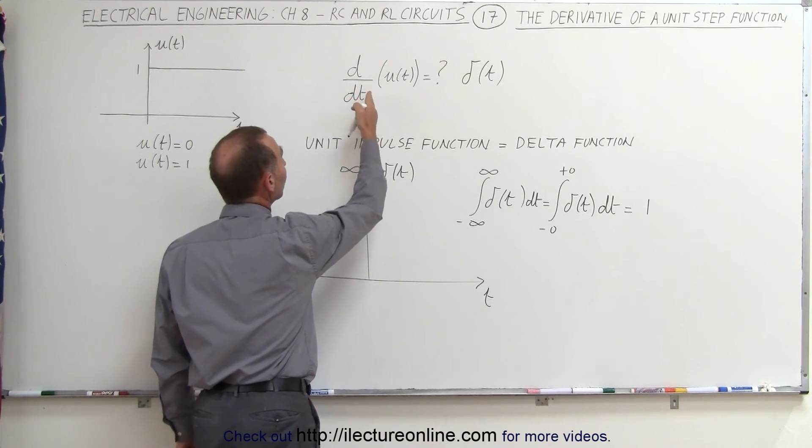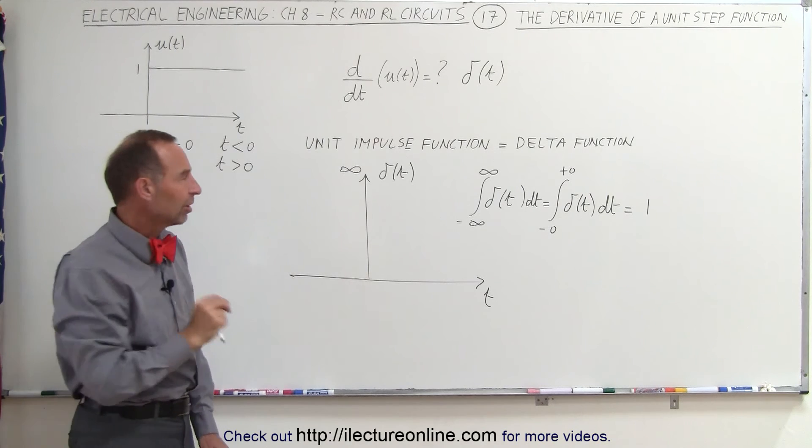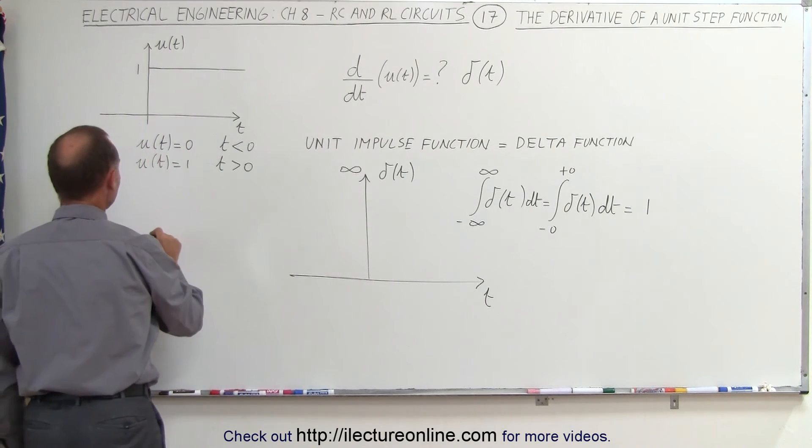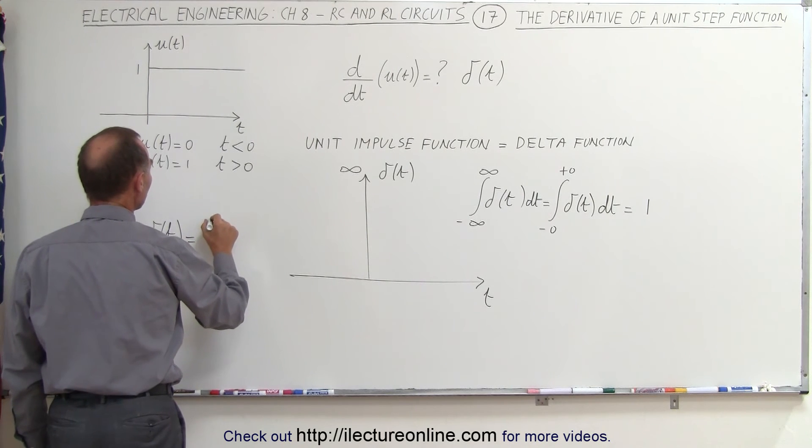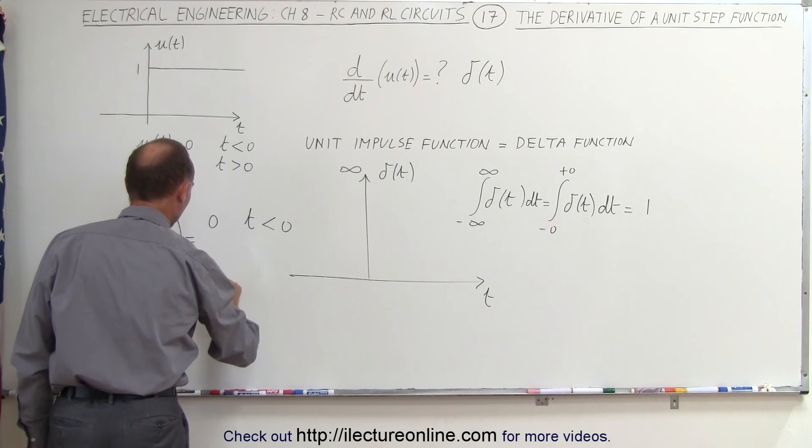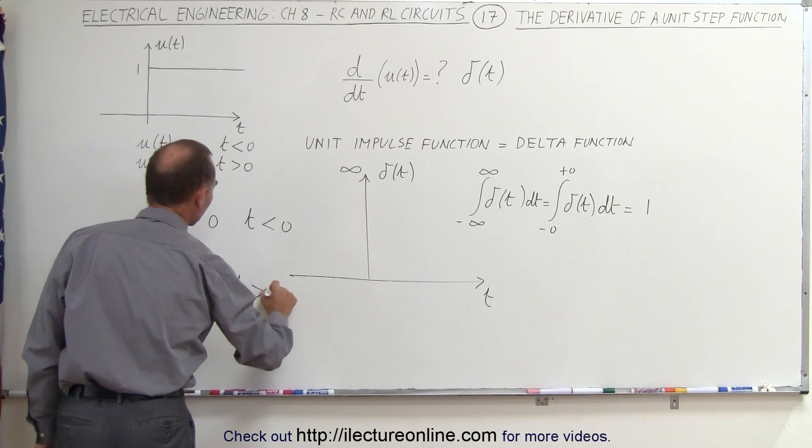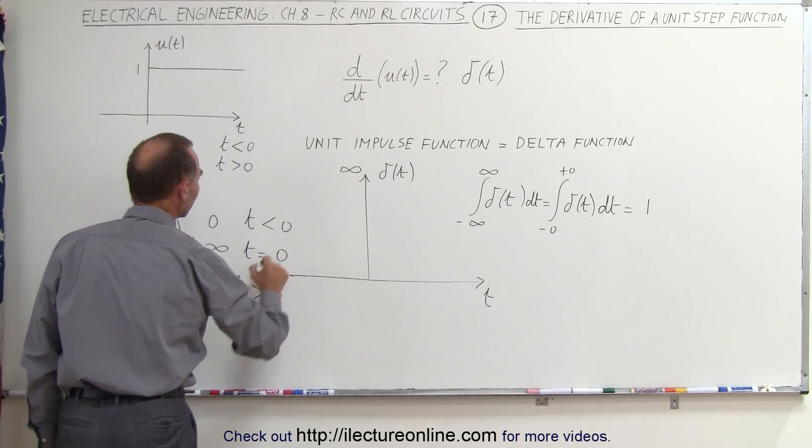and that means that it is the derivative of the unit step function. Now, to define it just a little bit more, what we can say is that this delta function is equal to 0 for t less than 0, it's equal to 0 for t greater than 0, and it's equal to infinity for time equal to 0.